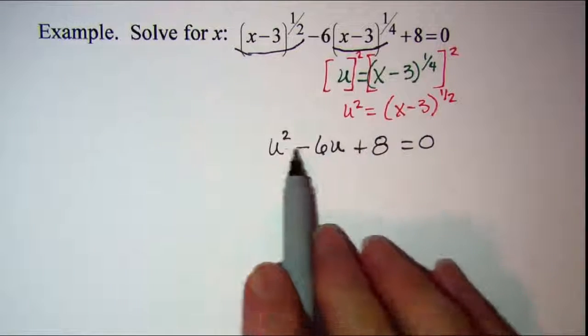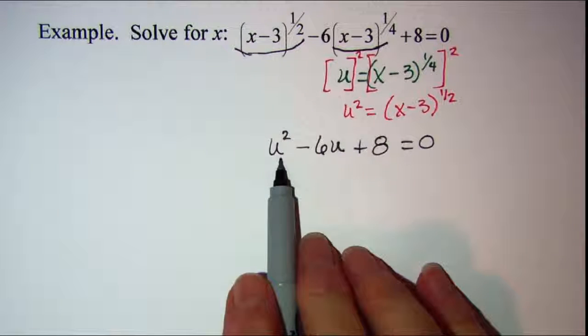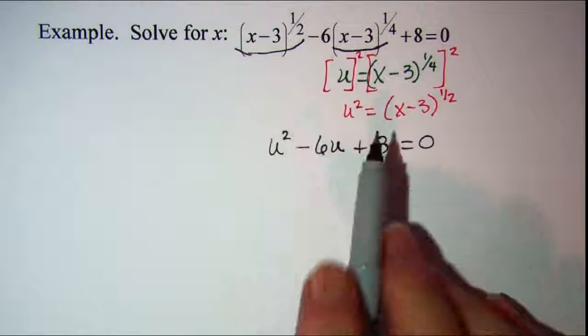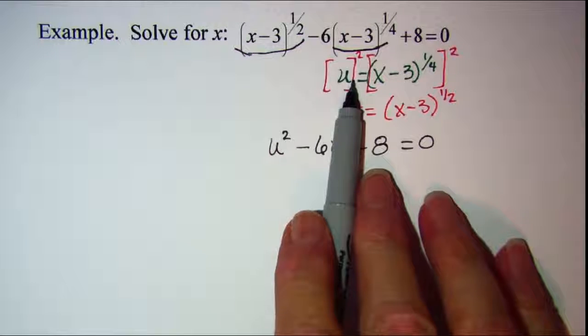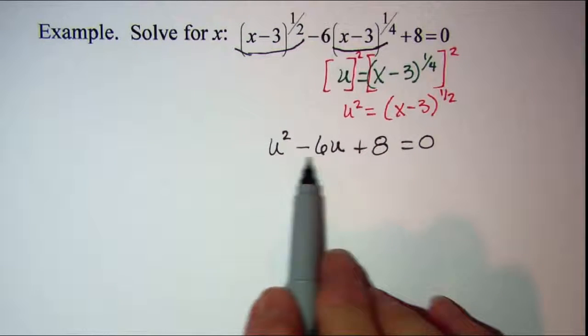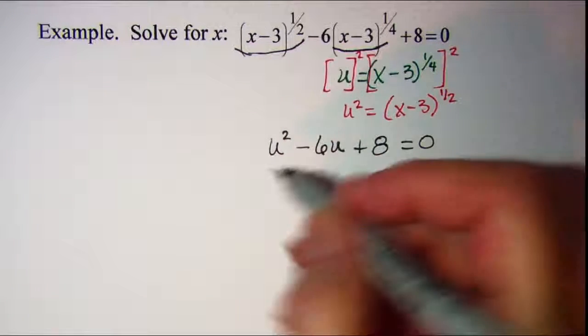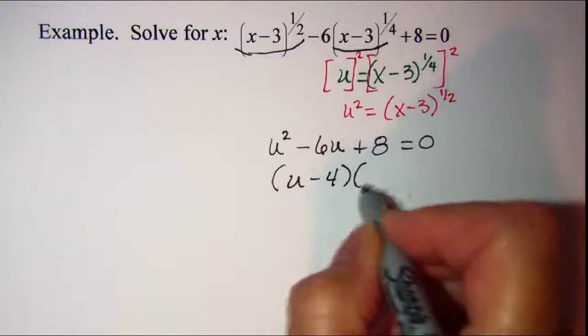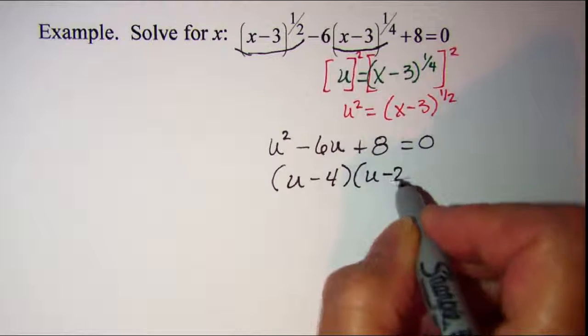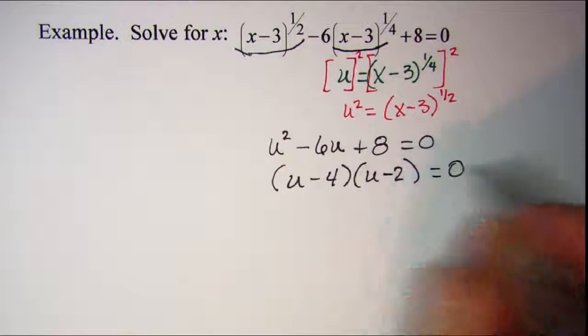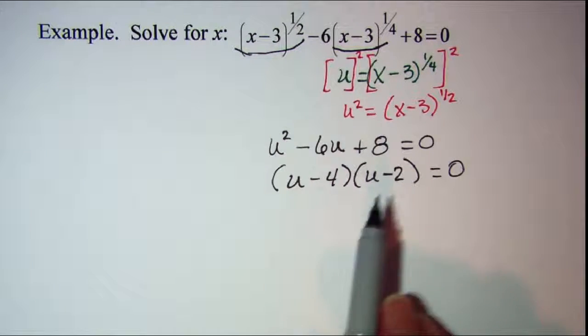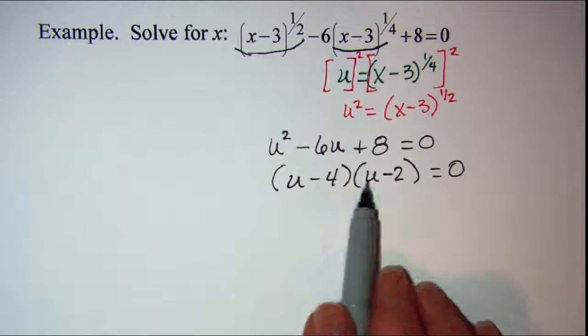So now I'm going to solve this simpler quadratic in u. And then once I have a value for u, then I can put that back in and find out what x is. This trinomial is factorable, u minus four times u minus two equals zero. I'll check it real quick, negative four times negative two is positive eight. And then the inners and the outers, negative four u and negative two u is negative six u.